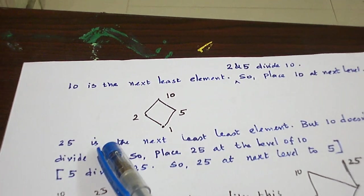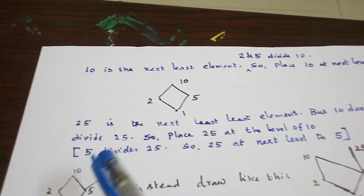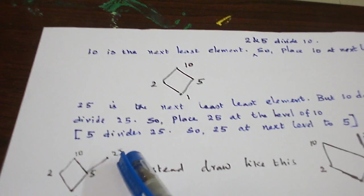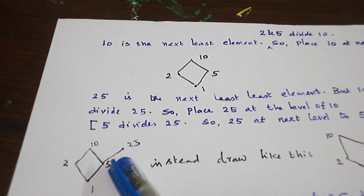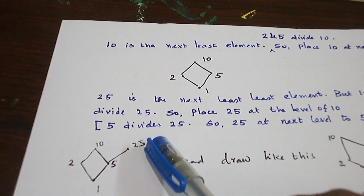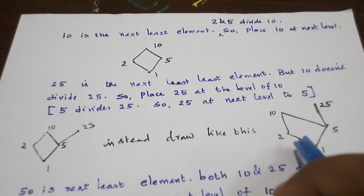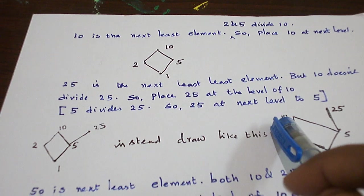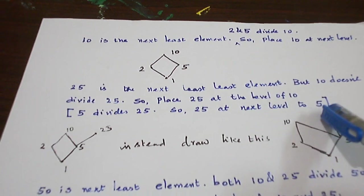Next, the element is 25. 10 does not divide 25, so we cannot place 25 above the level of 10. So we have to place it in parallel to 10. Now check whether 2 divides 25 — no. But 5 divides 25, so just place 25 above the level of 5, in parallel to 10. Draw a line from 5 to 25.